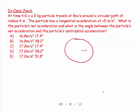My radius is 4 meters. Here's my particle. It's a 3 kilogram particle. It travels at 8 meters per second. So let's show it like this. 8 meters per second. This is V tangential. The particle has a tangential acceleration of plus 5 meters per second. So we'll have that. We'll call that acceleration tangential equals plus 5 meters per second squared. What is the particle's net acceleration?